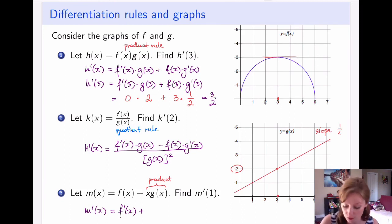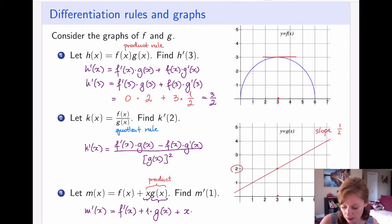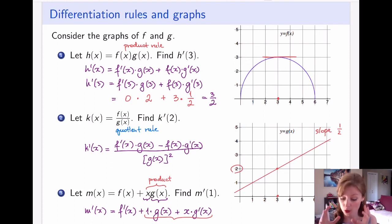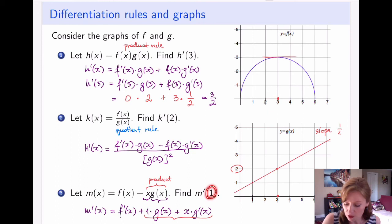The product rule on x·g(x) gives: the derivative of x (which is 1) times g(x), plus x times g prime(x). So the full derivative is f prime(x) + g(x) + x·g prime(x). Now I'm asked to compute this at x = 1, so I replace x with 1 and read the values off the graph.